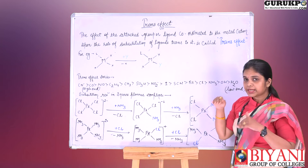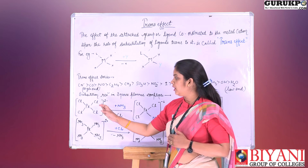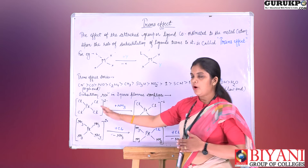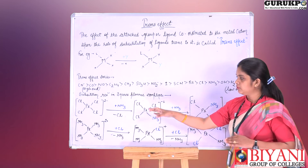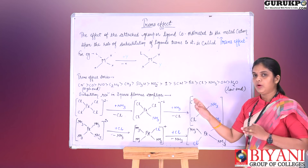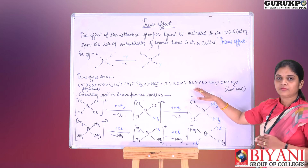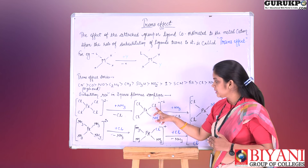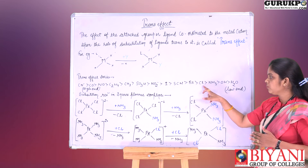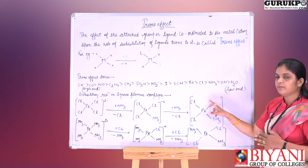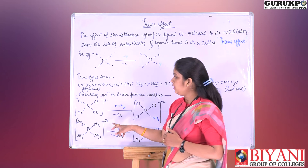This series explains which ligand is substituted or replaced by another ligand in a substitution reaction in square planar complexes. We take the example of the tetrachloroplatinum complex. When this complex reacts with ammonia, one Cl is replaced by the ammonia ligand. When another ammonia molecule attacks this complex, the trans effect decides which Cl is replaced. Since chlorine has a higher trans effect than ammonia, the Cl trans to Cl is replaced, and we get the cis product.